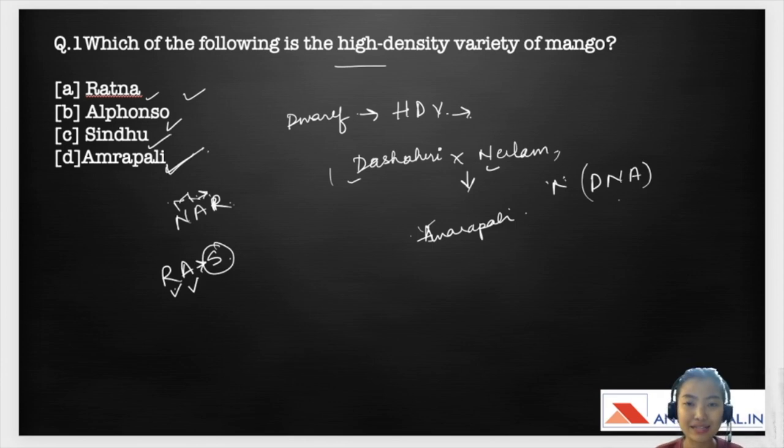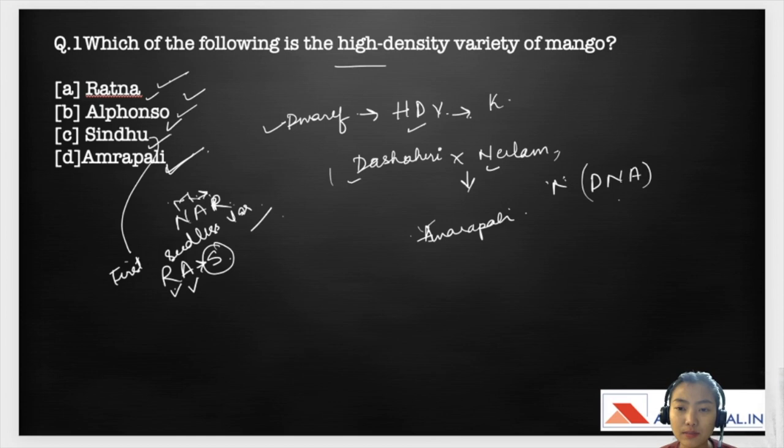So Radna is tolerant or resistant to spongy tissue and Alfonso is one of the best variety for export and it's a mid-season variety. Whereas Sindhu is the first seedless variety in the world. Amrapali is a dwarf variety, it is high density, it is suitable for kitchen garden and it was produced by IARI.